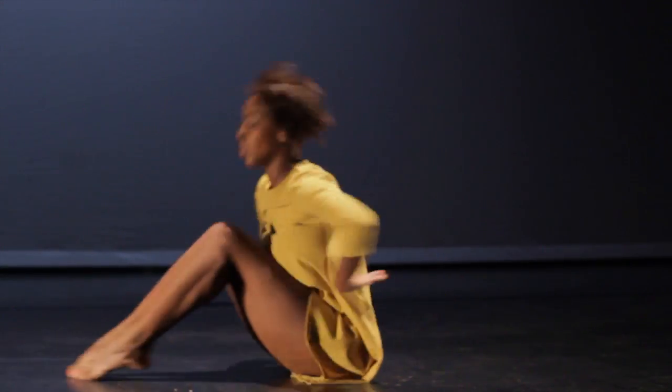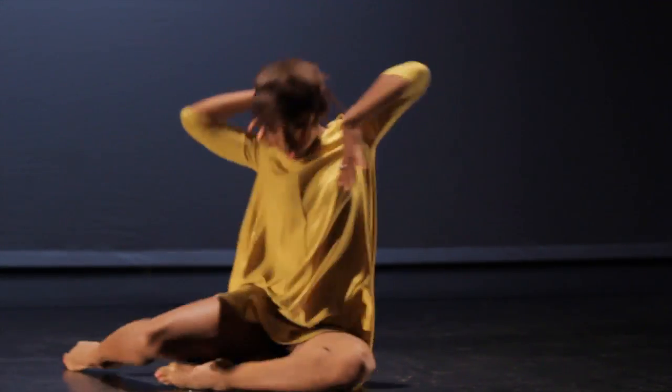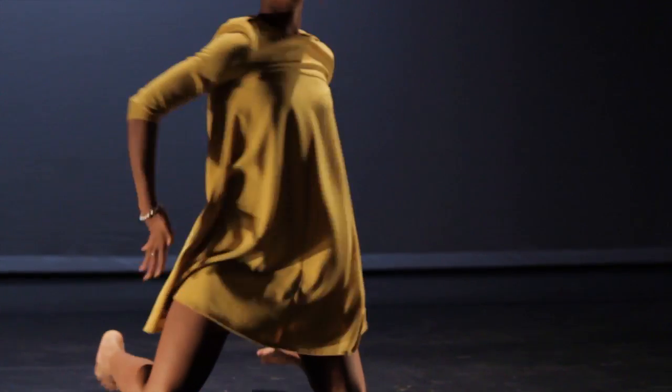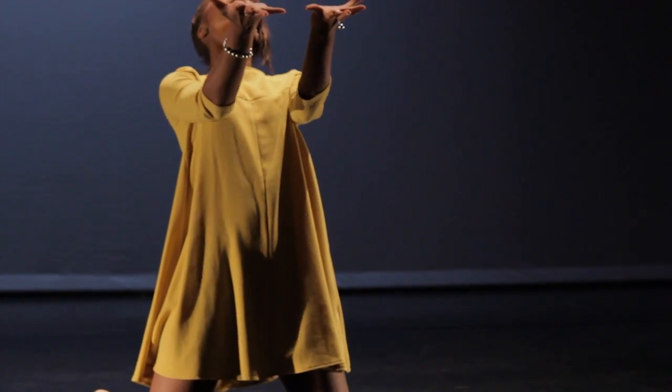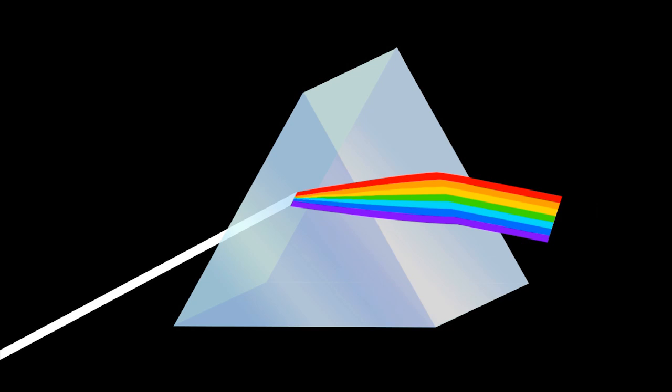Before we can start to use color, we need to make sure that we understand how light works, and particularly how white light works. I'm sure you're all familiar with Newton's famous experiment where a beam of white light is refracted through a prism, and we see that beam is dispersed into red, orange, yellow, green, blue, indigo, and violet. From that experiment, we're able to deduce that white light is in fact made up of several different colors. Further work has enabled us to reduce the primary colors of light to red, green, and blue. By mixing these three colors together additively, you get white light.